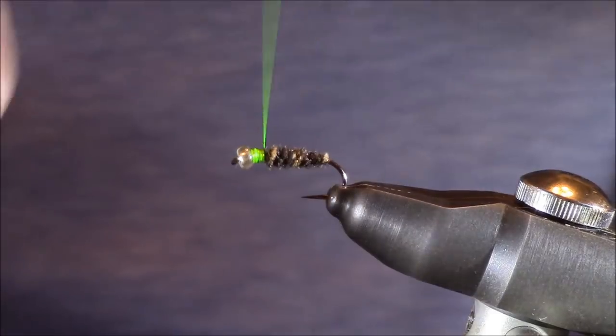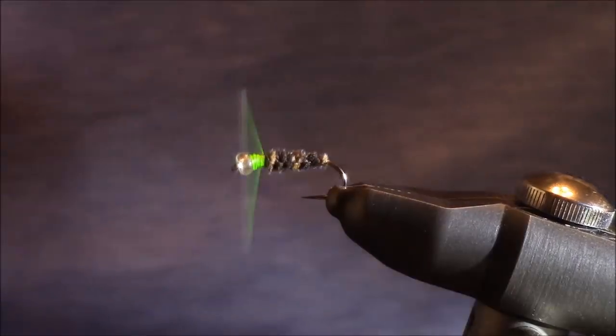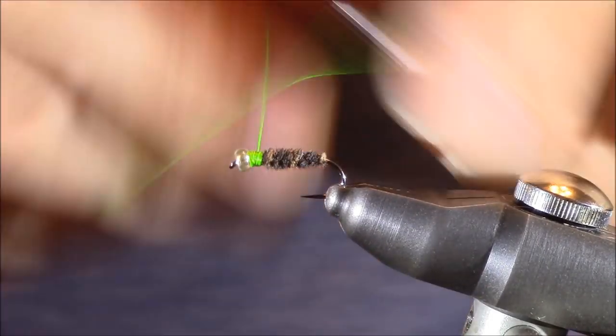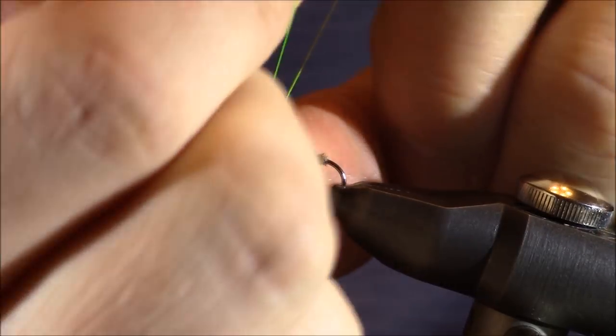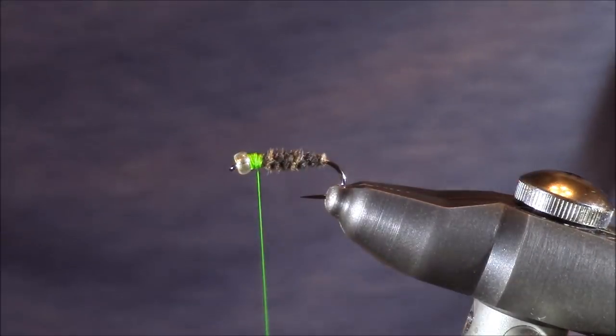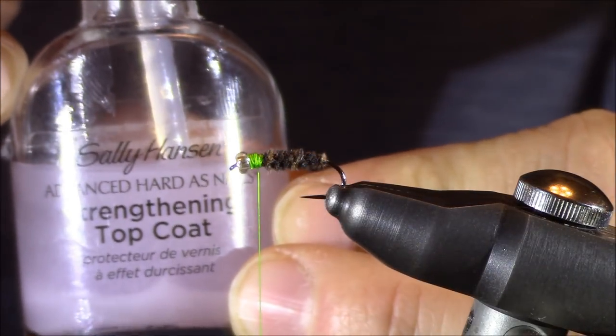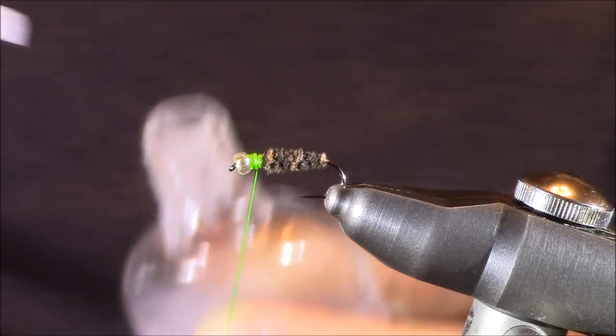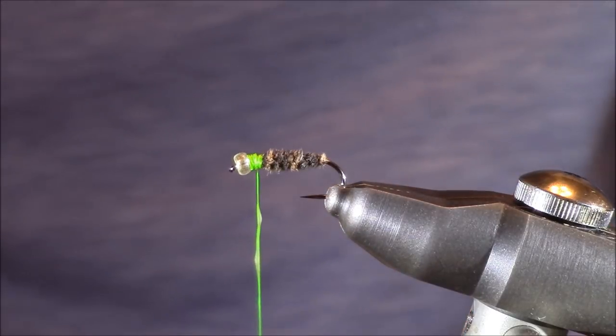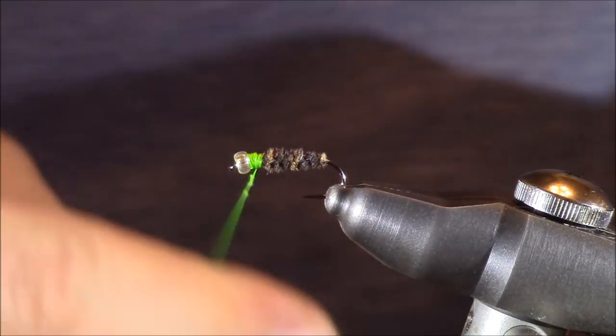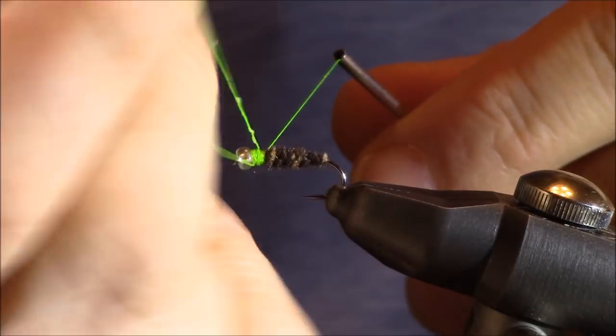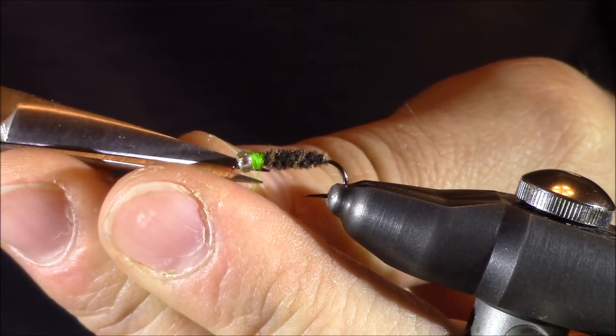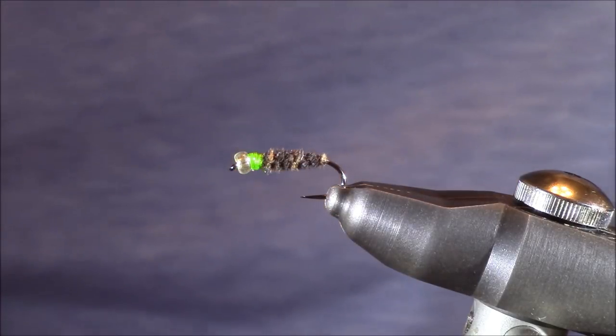Once you start to see it, and it looks like it's relatively even the whole way around, which is basically right now, you can immediately go into your whip finish and complete this fly. So, I'm just going to put a few in real quick, and then before I go any further, I'm just going to grab a little bit of Sally Hansen Hard as Nails. It should not be this color, and I have a funny story about that, though I'm not going to share it today. I'm just going to place a little bit of that on the thread to help secure it, go with one more whip finish, and trim my thread away.